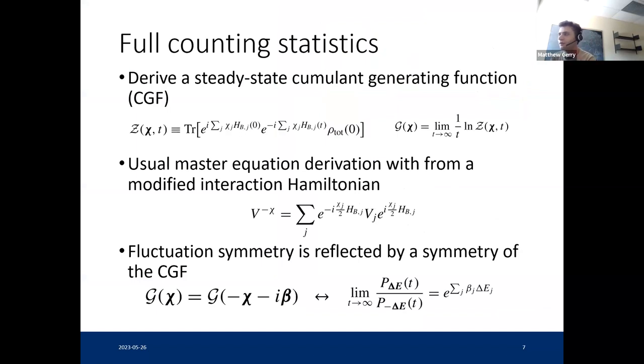You can, as with any quantum master equation, you can carry out full counting statistics and get a generating function that, in our case for heat transport, contains all of the properties of the distribution over quantities of heat exchanged with the bath. And for the unified master equation, it can be shown to satisfy fluctuation symmetry, which is equivalent to having fluctuation theorems for energy exchange that guarantee things like the second law being satisfied at the level of averages, no heat flow from cold to hot or any weird properties like that.